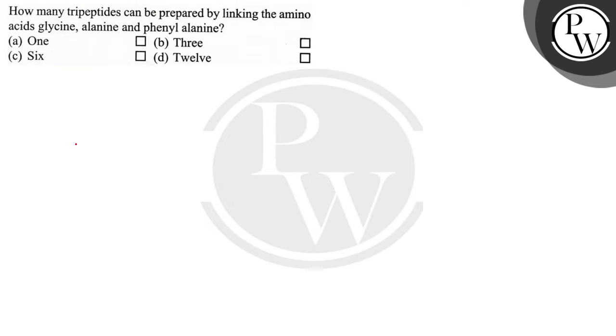Hello, let's read the question. How many tripeptides can be prepared by linking the amino acids glycine, alanine, and phenylalanine? Is it 1, 3, 6, or 12? Okay, so let's do the question.